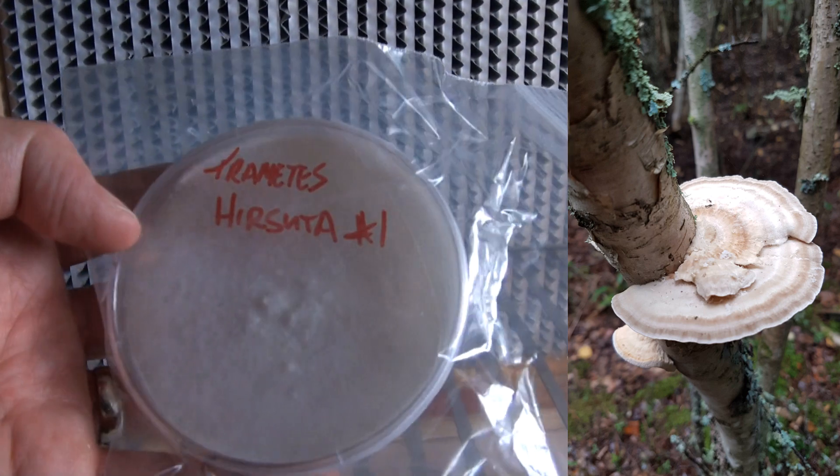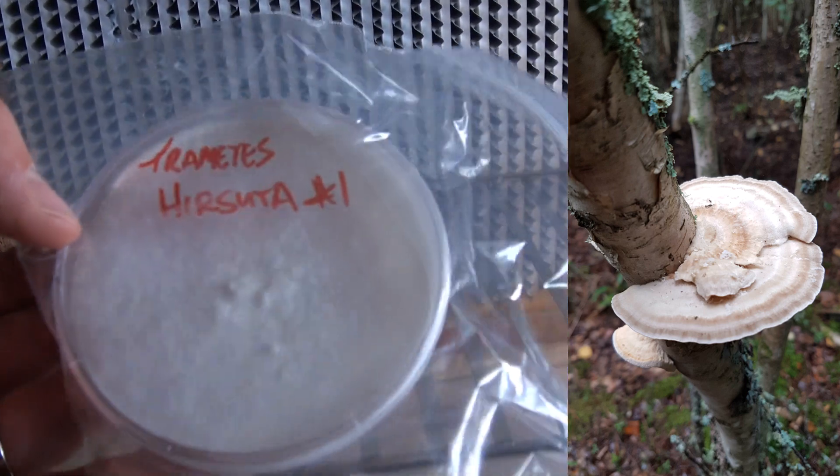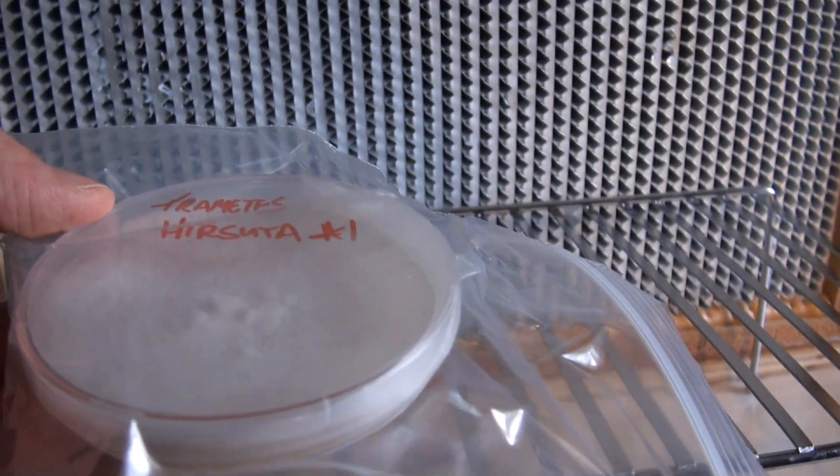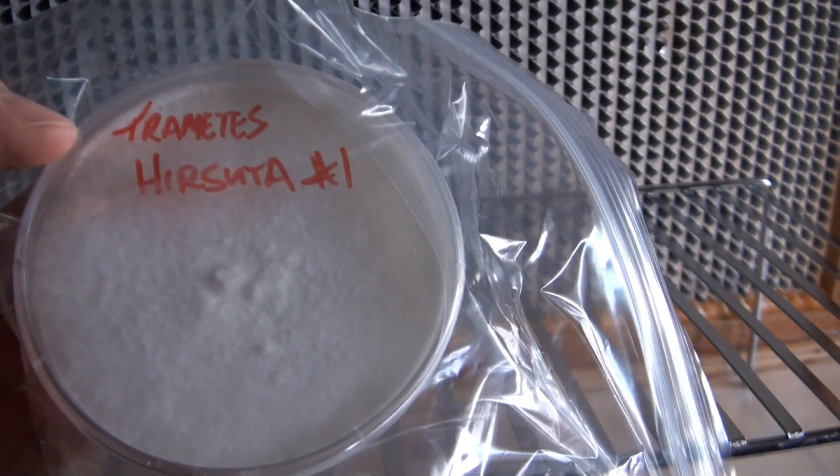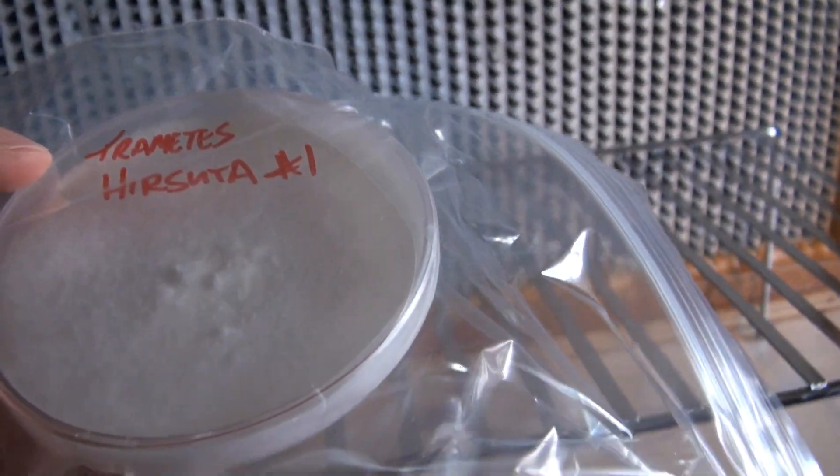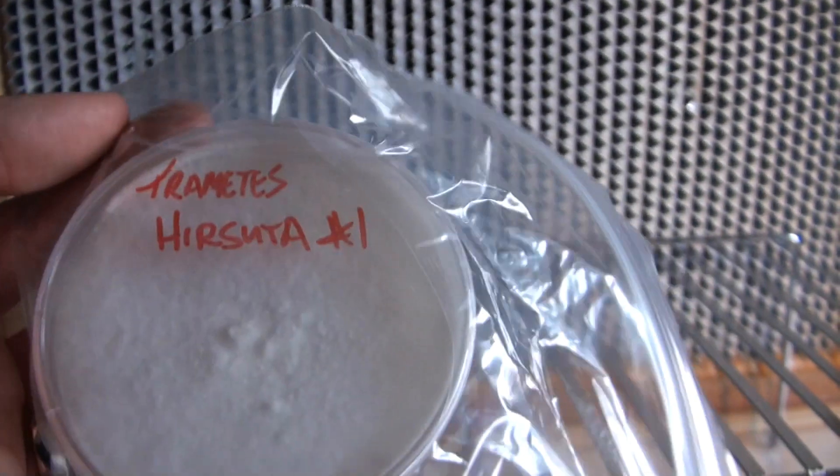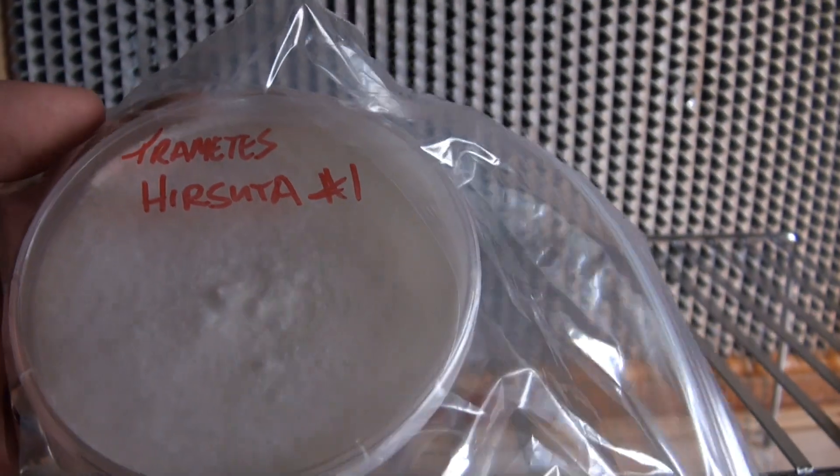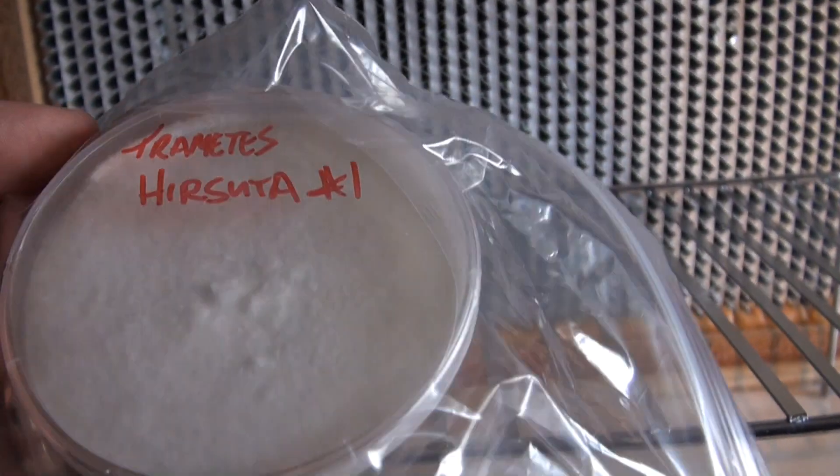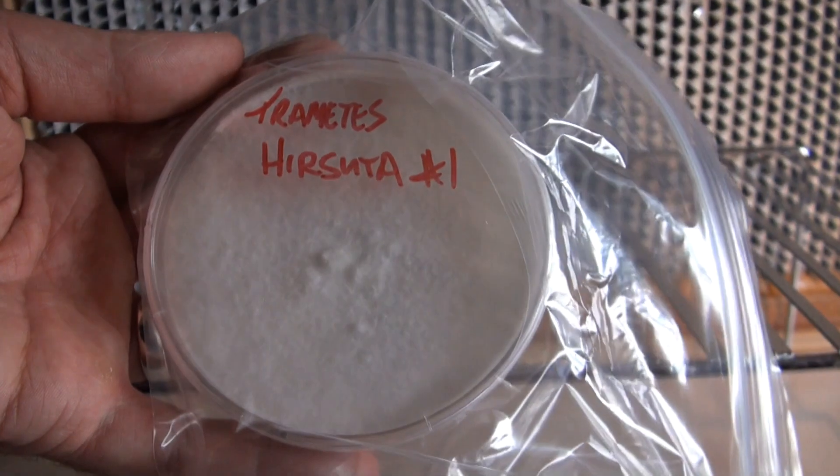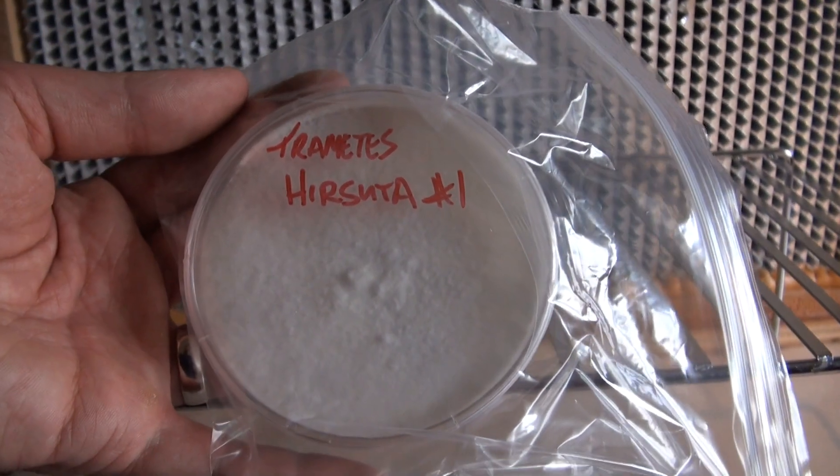So I just want to show you some examples. This is a Tremella species that I cloned. As you can see, this was the first transfer and it's filled with nothing but pure white mycelium. So in the very first transfer we got a pure culture. I'm going to continue to culture this out just to make sure there's no contamination. But there's one example of a clone from a wild species that went really well.